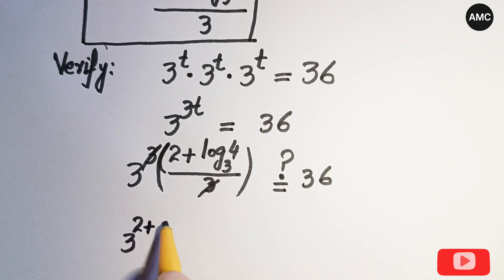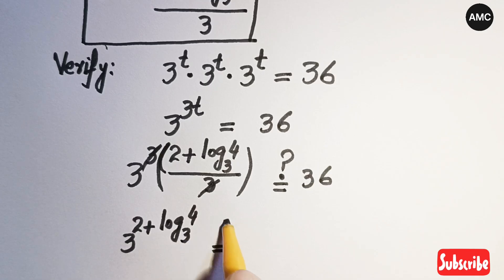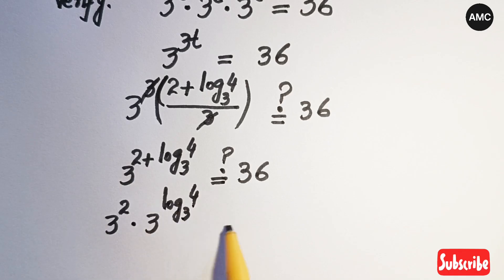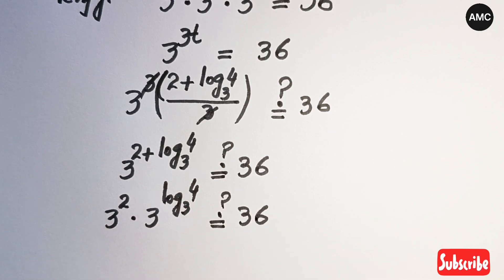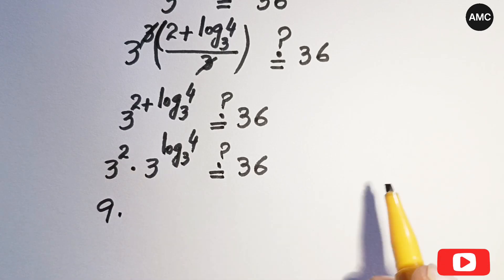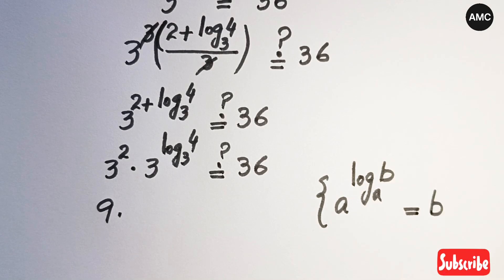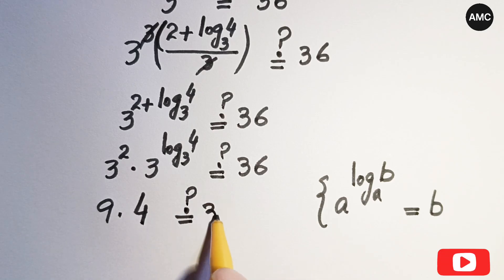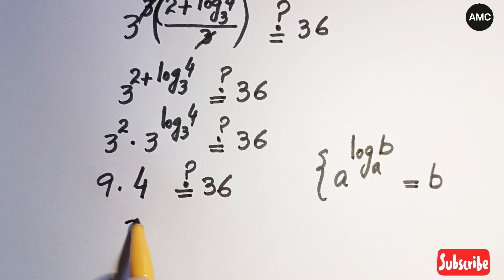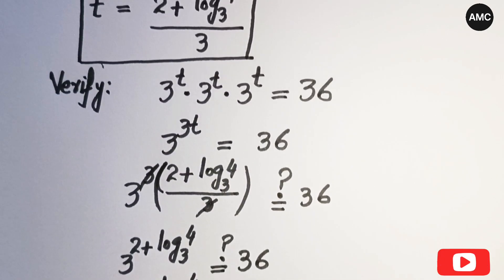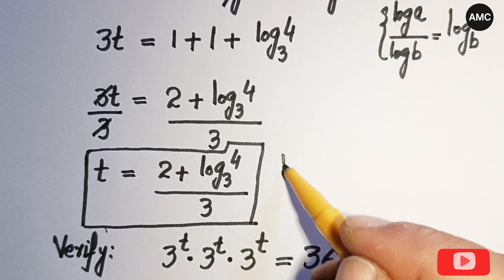So we need to check whether 3 to the power (2 plus log base 3 of 4) equals 36. By exponential laws, this is 3 squared times 3 to the power log base 3 of 4. Now 3 squared is 9, and using the law a to the power log base a of b equals b, we get 9 times 4. Since 9 times 4 is 36, and 36 equals 36, the left hand side equals the right hand side.